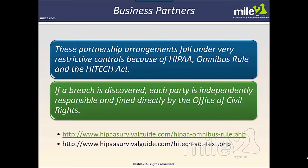There are three issues here: HIPAA, the omnibus rule, and the HITECH Act. There's also something called the Office of Civil Rights that says if a breach is discovered, each party involved — whether a provider, healthcare deliverer, healthcare professional, hospital, or clinic — would all be fined directly by the Office of Civil Rights. This is an office of the Department of Health and Human Services in the U.S. government. We need to understand the technologies and flows of information between these partners so that we can identify where the breach happened, who was actually culpable, and which entity in this end-to-end relationship caused the breach in the first place.